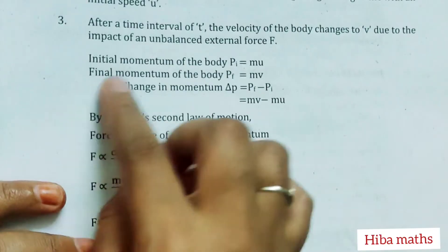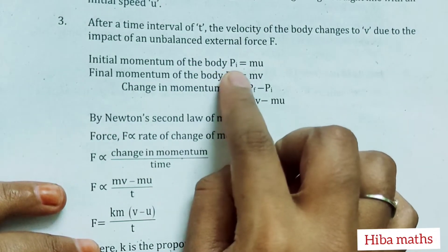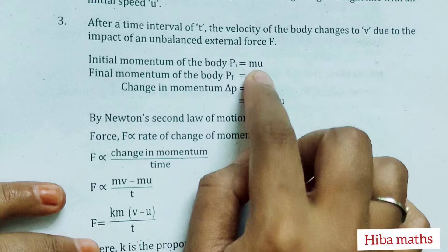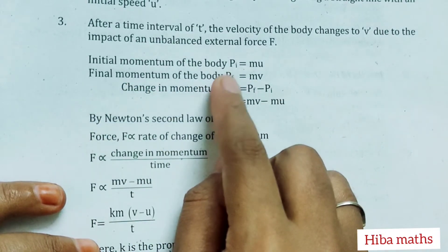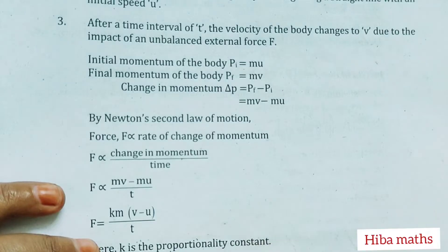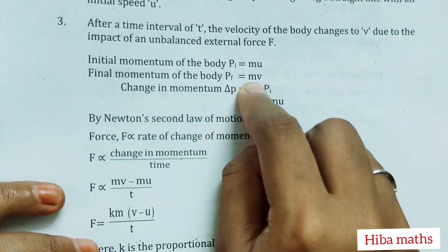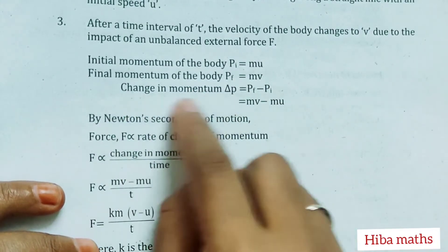Initial momentum of the body, Pi = m × u, because the initial speed is u. Final momentum of the body, Pf = m × v.